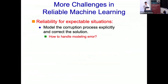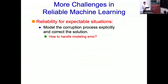Our team is interested in robust and reliable machine learning. The approaches I introduced are more about reliability for expectable situations — we model the corruption process explicitly via the noise transition matrix, estimate it, and correct the solution explicitly. This is nice if the model is correct, but in reality our noise assumption or corruption process assumption may not really be true. We can have a good approximation but never the exact truth. How to handle modeling error is still a big issue.